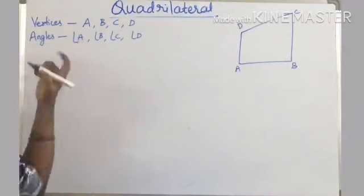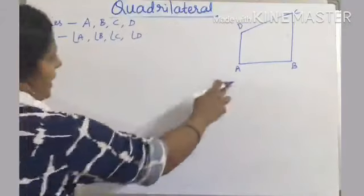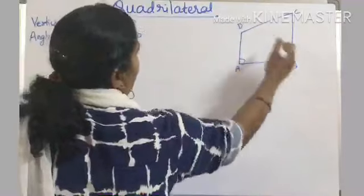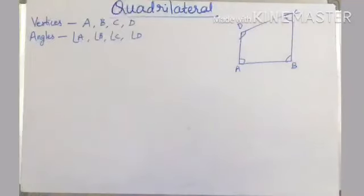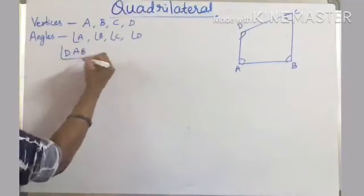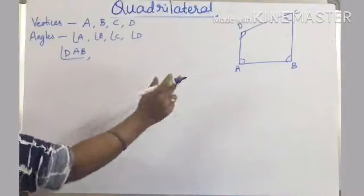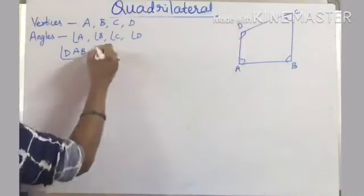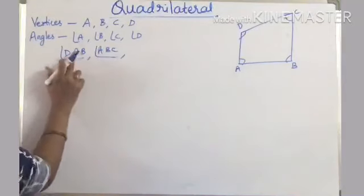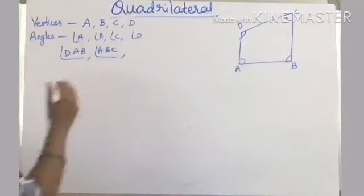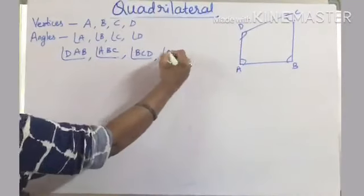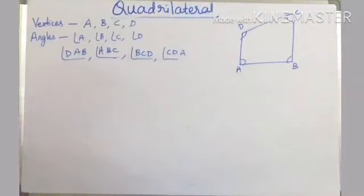To represent an angle in three letters, the vertex should always be in the middle. Angle A can be written as DAB or BAD. Angle B can be written as ABC or CBA. Angle C can be written as BCD or DCB. Angle D can be written as CDA or ADC.